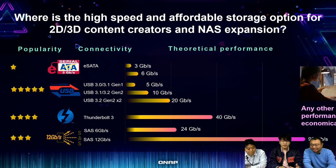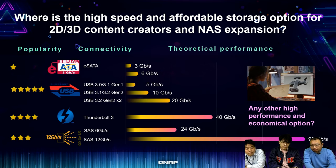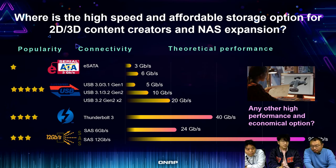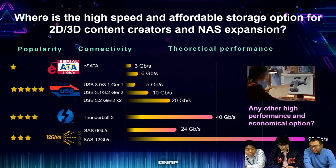Currently we have several ways for expansion: eSATA, USB, Thunderbolt, and SAS. eSATA started at only 3 gigabit per second, evolving to 6 gigabit, but the problem is you don't find this connector on computers or laptops anymore — it has become obsolete. The most popular connector is USB: USB 2.0 gives about 400 megabit per second, and USB 3.0 (also named 3.1 Gen 1) gives you 5 gigabit per second.